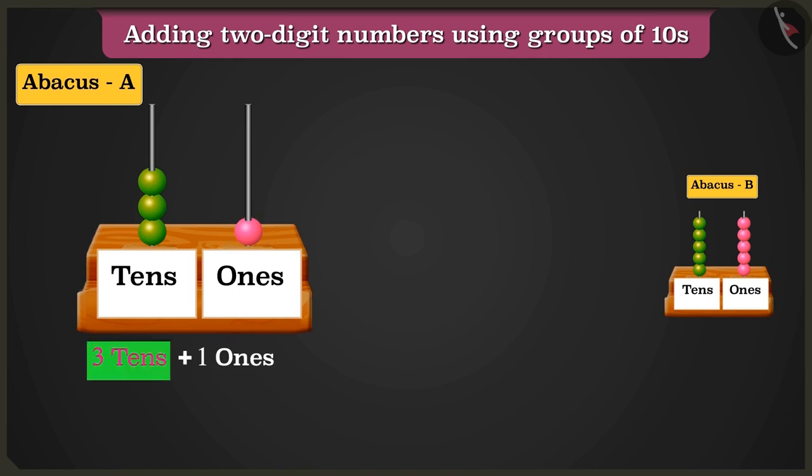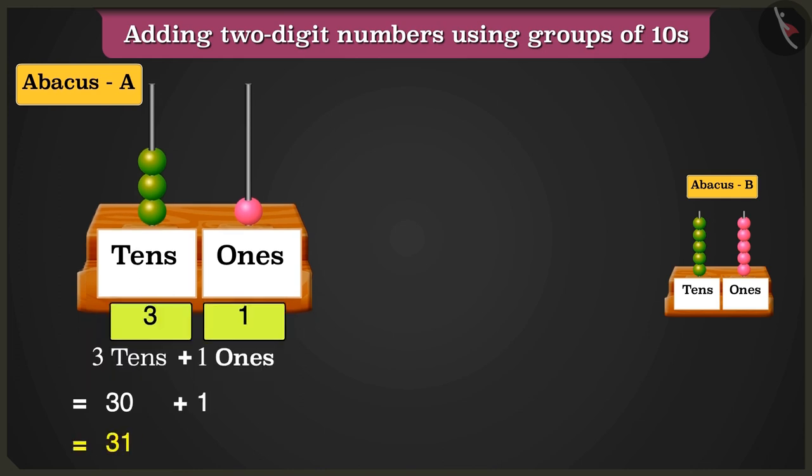So adding 3 10s, that are 30 and 1 1s, that is 1 will be equal to 31. Hey, perfect answer, Greeny.